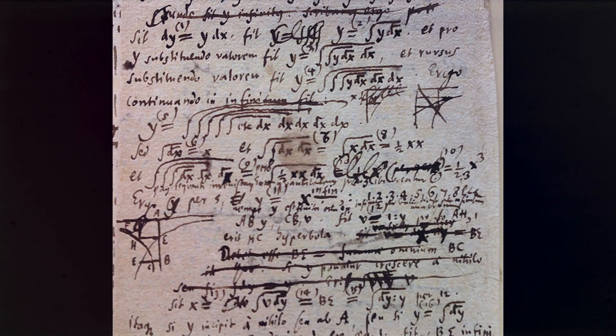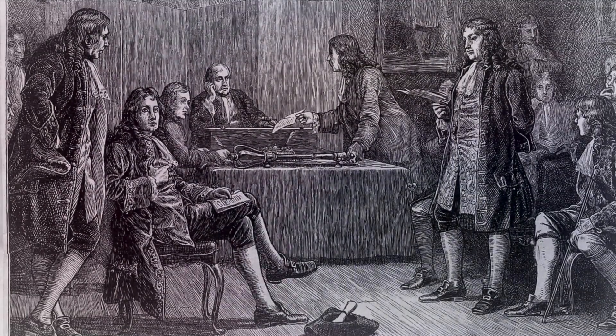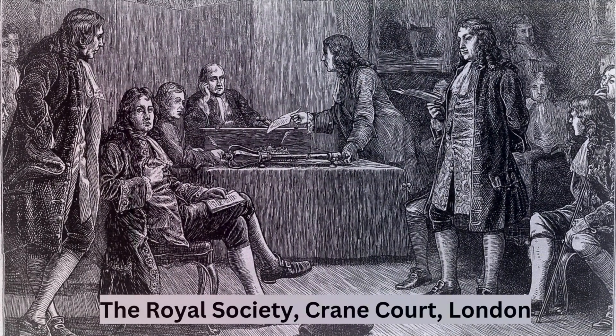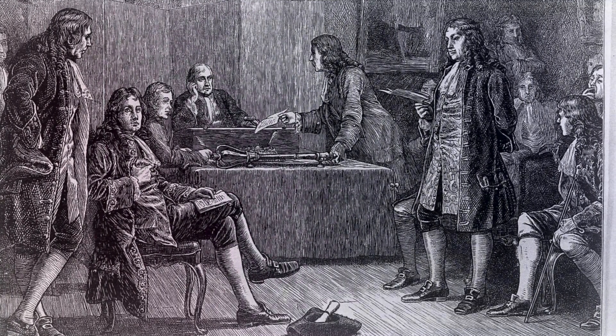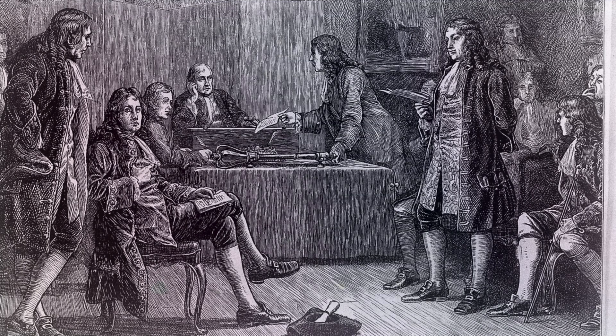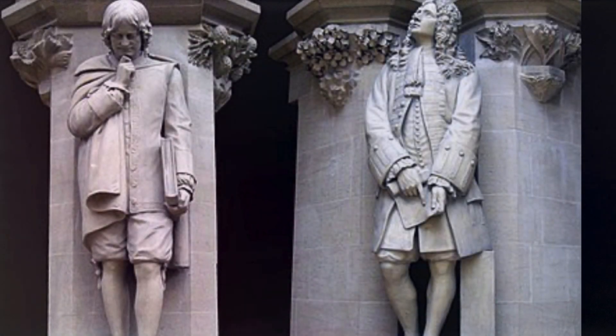However, the dispute was not merely one of academic credit. It became deeply personal, with Newton's allies, particularly the Royal Society, launching accusations of plagiarism against Leibniz. Newton himself, though publicly reserved, orchestrated much of the campaign against his rival, ensuring that Leibniz's contributions were downplayed in Britain.